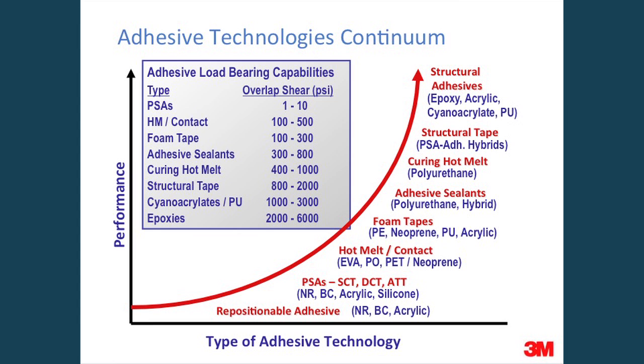You'll see here on this chart the adhesive load-bearing capabilities when you test for an overlap shear. The type of adhesive, such as a pressure-sensitive adhesive, will have an overlap shear of 1 to 10 pounds per square inch, whereas an epoxy will have a stronger strength of 2,000 to 6,000 pounds per square inch.